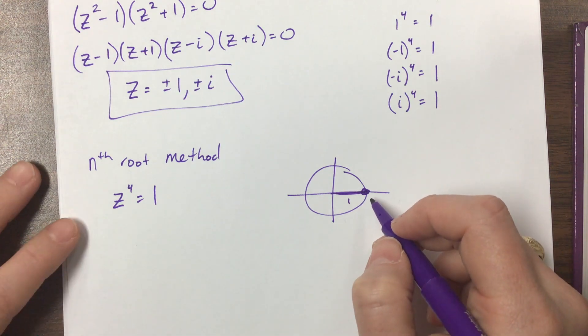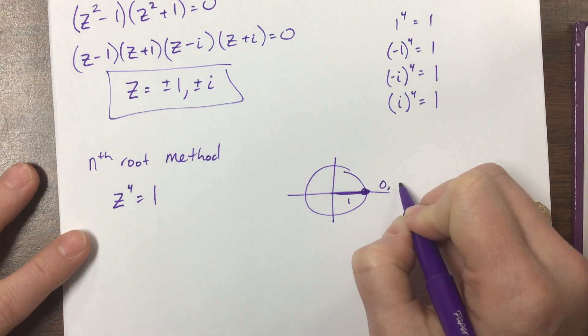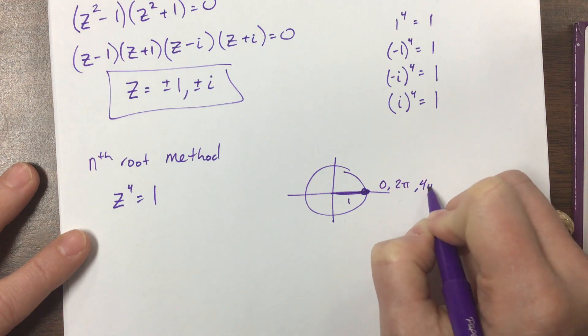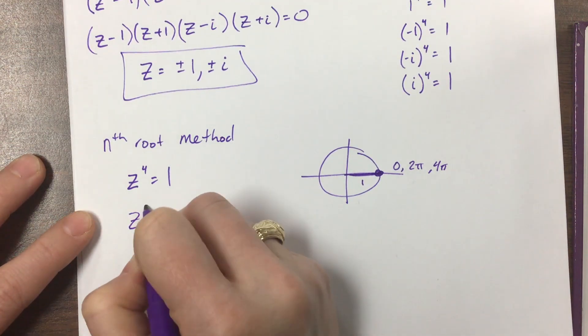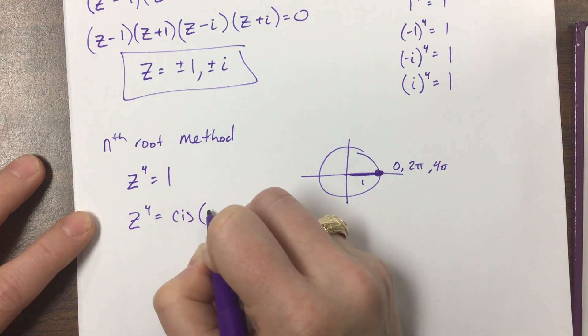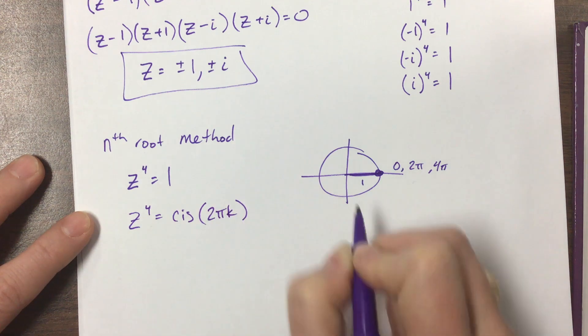Okay, or 0, this is at 0, this is also at 2 pi, this is also at 4 pi. So we can say that this is, that our z to the fourth is equal to cis of 2 pi k.